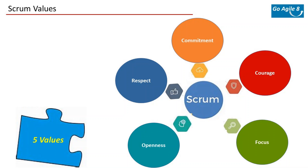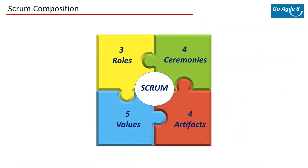We reviewed in Kanban that making things explicit is a key principle. Here, scrum founders are explicitly conveying that there are things called values and you better align with these values if you want to be in an agile world. To summarize: scrum has four main things — scrum roles, ceremonies, artifacts, and values. With that we covered the main overview of what scrum is.